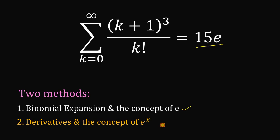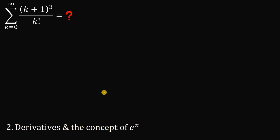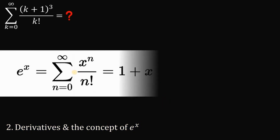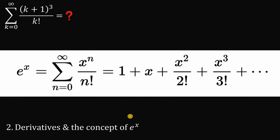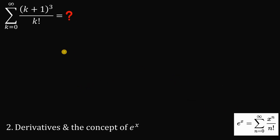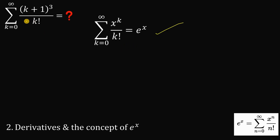Now for the second approach — the shortcut using derivatives and e^x. We know e^x equals the summation of x^k / k! from k=0 to infinity. We will use this to evaluate the summation of (k+1)³/k! from k=0 to infinity. First, multiply both sides by x, so x·e^x equals Σ x^(k+1)/k!.